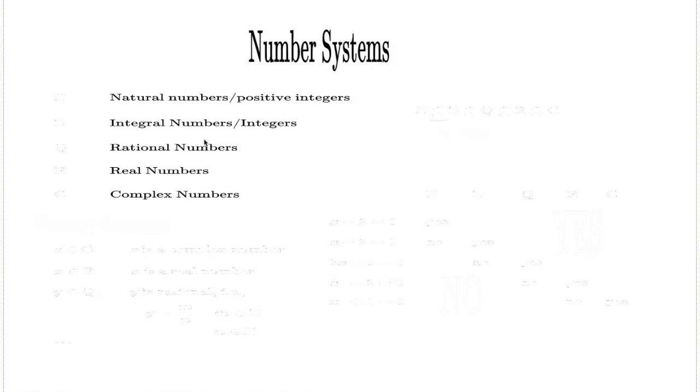These classes of numbers have symbolic notations. The natural numbers, we use the letter N for that. Z for integers, Q for rationals, R for reals, and C for complex. Natural numbers is the smallest class of numbers, and complex numbers is the largest class of numbers we do in mathematics.